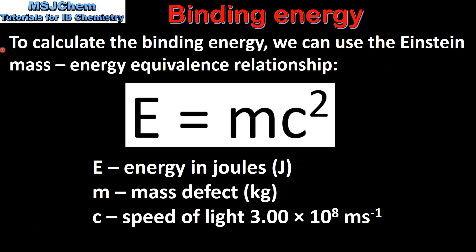To calculate the binding energy we can use the Einstein mass-energy equivalence relationship, which is E equals MC squared. E is the energy in joules, M is the mass defect in kilograms, and C is the speed of light.